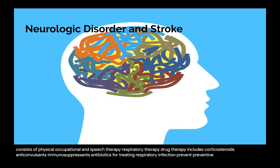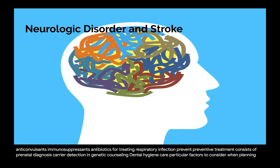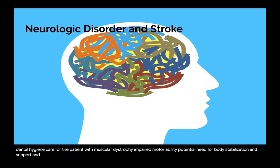Preventive treatment consists of prenatal diagnosis, carrier detection, and genetic counseling. Particular factors to consider when planning dental hygiene care for the patient with muscular dystrophy include impaired motor ability, potential need for body stabilization and support, and that some types involve oral-facial muscles.